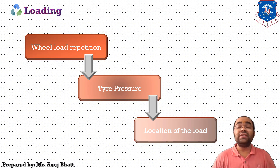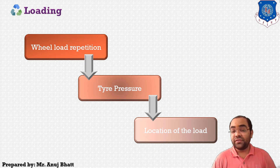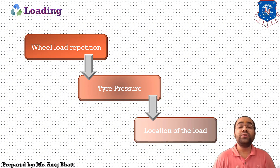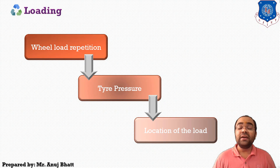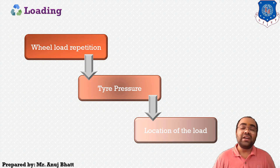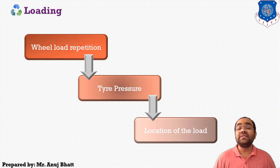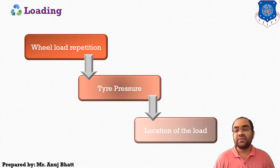So the three major things considered under loading are: first, wheel load repetition — how many repetitions are coming on the slab; second, tire pressure; and third, the location of the load, which determines where the greatest stress occurs.